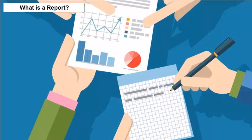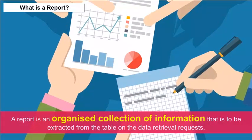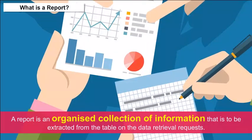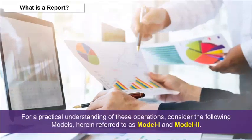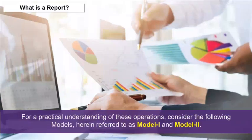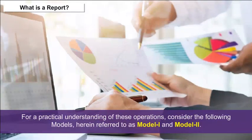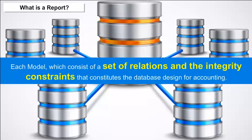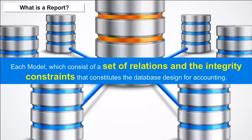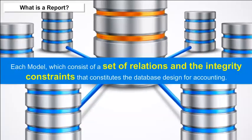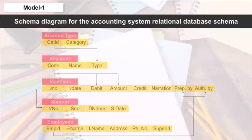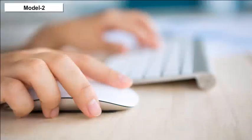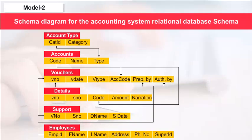What is a report? A report is an organized collection of information that is to be extracted from the table on data retrieval requests. For practical understanding, consider the following models referred to as Model 1 and Model 2. Each model consists of a set of relations and integrity constraints that constitute the database design for accounting.